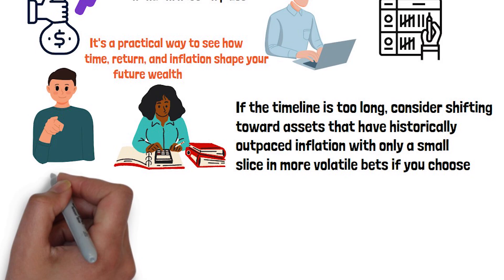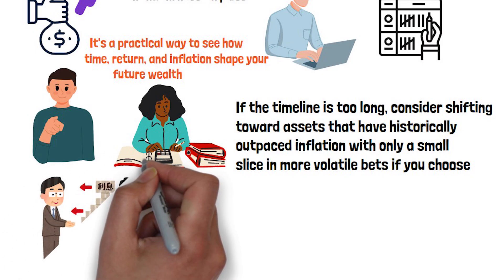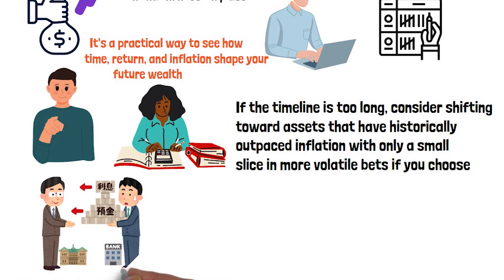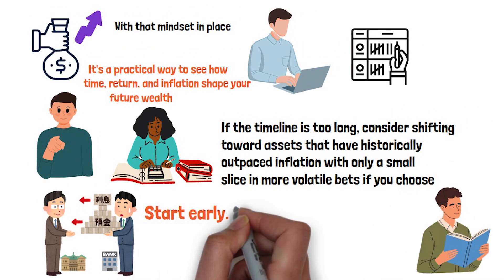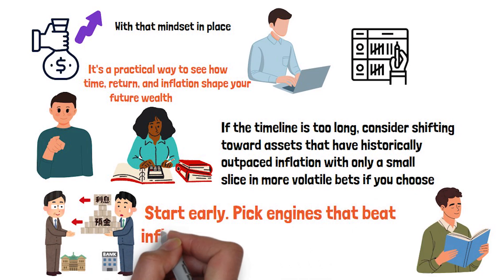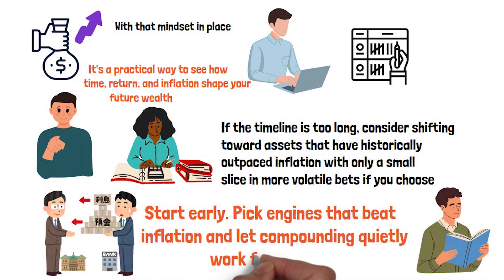Tell me below, what return are you assuming? And how many years does that give you, with 72 divided by return? I'll read the most interesting answers. Start early. Pick engines that beat inflation and let compounding quietly work for you.